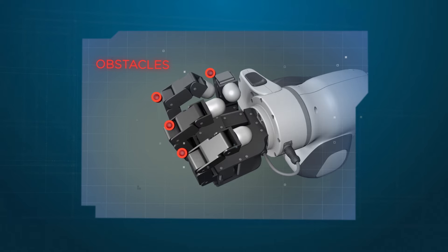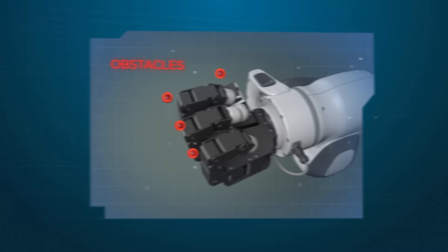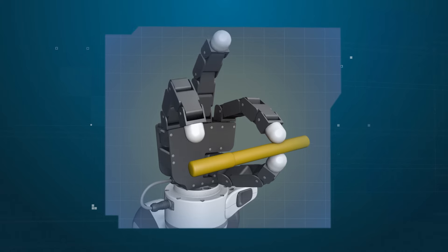As a rule of thumb, the more joints, the more complex the joint space, and the harder it is to avoid obstacles.